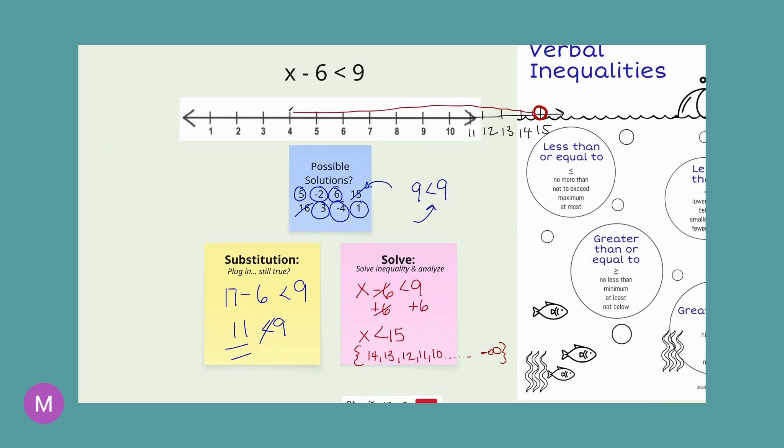And then all the numbers less than 15 would be 14, 13, 12, all the way down to 1, and even further with our negatives. So if we had our 0 and then negative 1, it would include all the negatives as well, which we saw. 5 would be in this solution set. Negative 2 would be as well. 6, yep, it's shaded. 15, not a solution because it's the open circle. 16, definitely not a solution. It's not shaded, but 3 is and negative 4 is and 1 is as well. So we can see that our substitution, we are accurate in that.